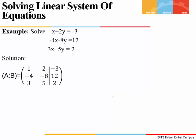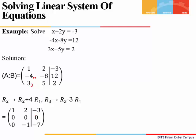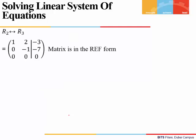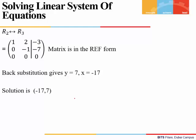Let's solve another system. We start by forming the augmented matrix, where the pivot is fortunately 1. We need to make the values below the pivot zero, so we take the transformations R2 equals R2 plus 4R1 and R3 equals R3 minus 3R1. The second row reduces to all zeros, so for REF form we interchange R2 and R3. This matrix is now in REF form. Back substituting gives minus 1 times y equals minus 7, so y equals 7. Then x plus 2y equals minus 3, and substituting y equals 7 gives the solution (minus 17, 7).